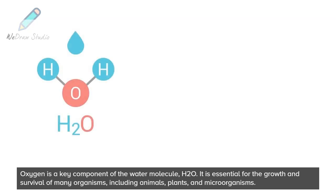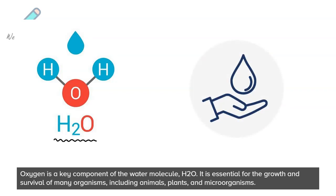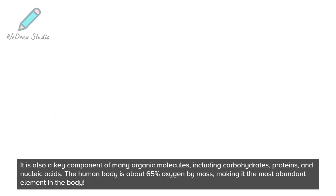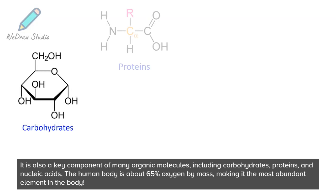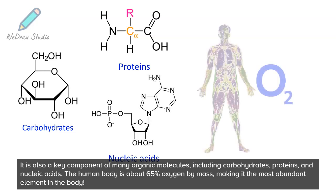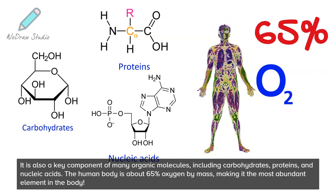Oxygen is a key component of the water molecule, H2O. It is essential for the growth and survival of many organisms, including animals, plants, and microorganisms. It is also a key component of many organic molecules, including carbohydrates, proteins, and nucleic acids. The human body is about 65% oxygen by mass, making it the most abundant element in the body.